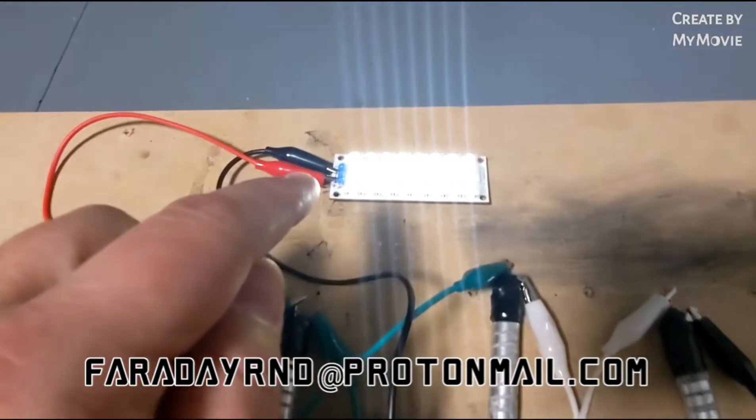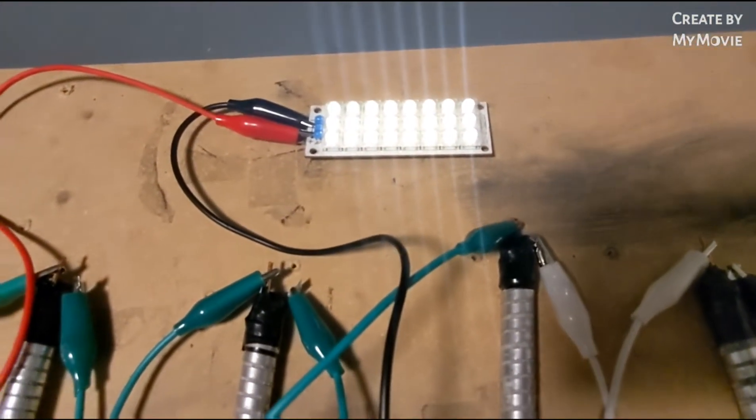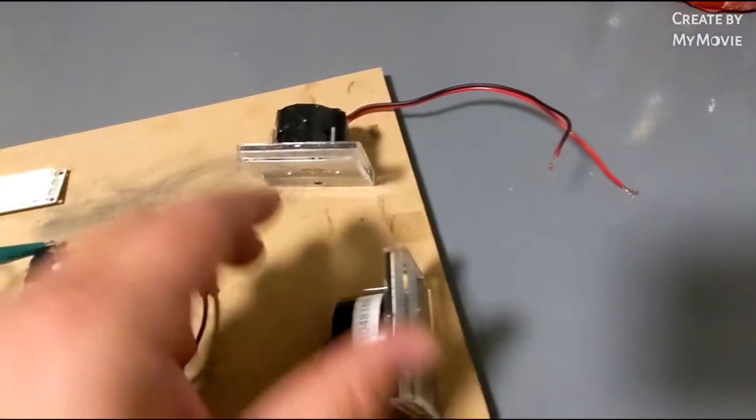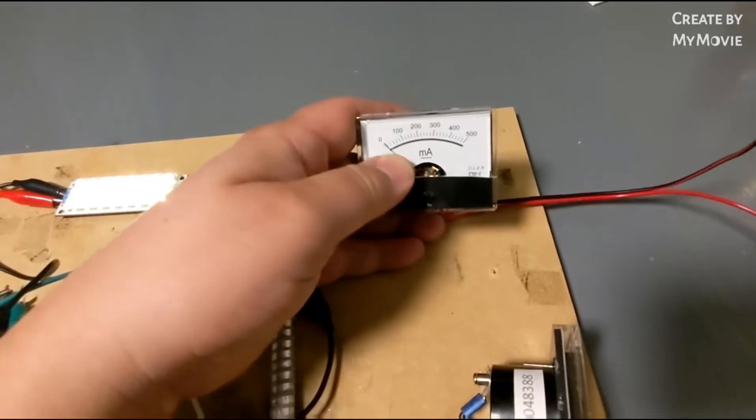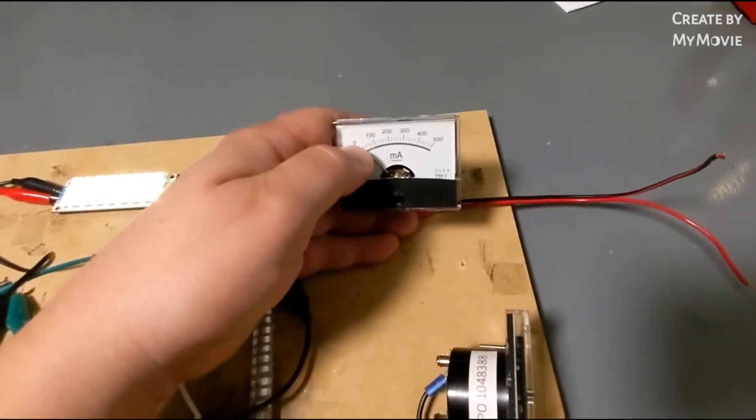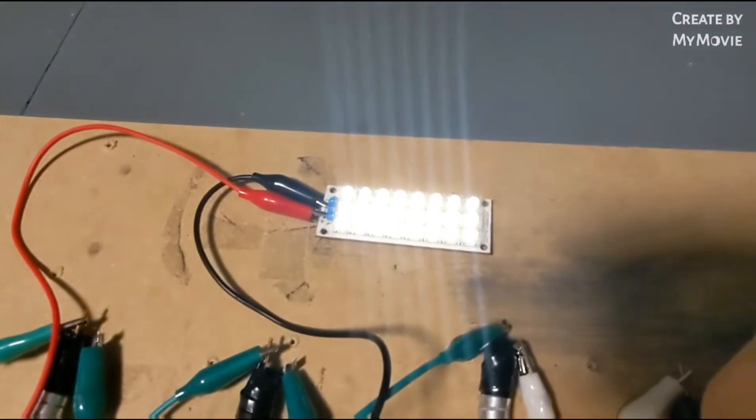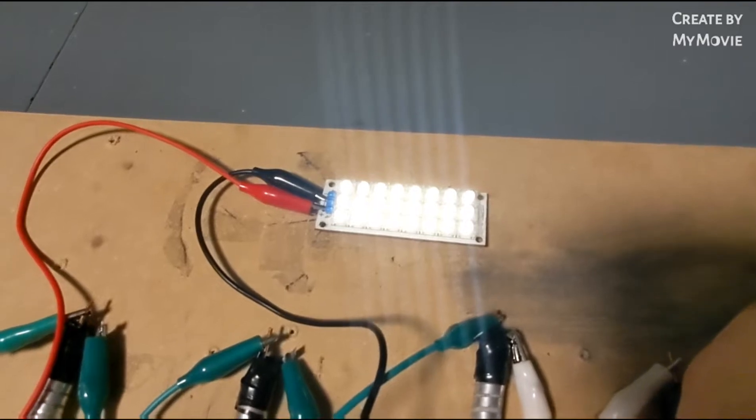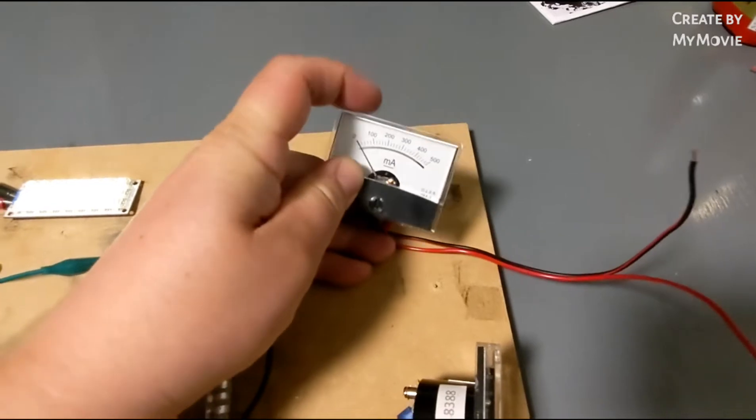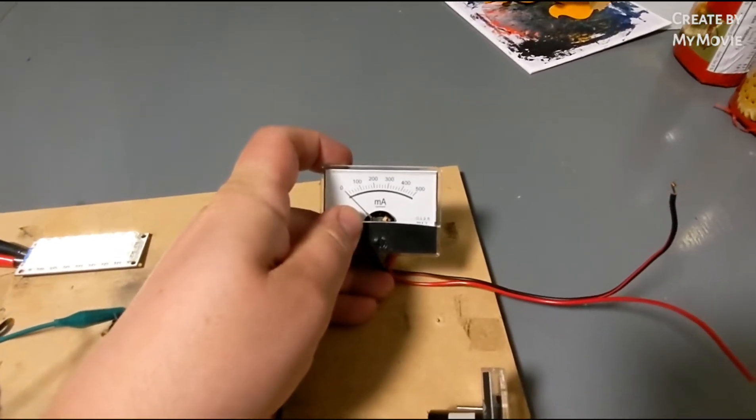I hooked up the light and this light went nuts. I'm like, oh my god, where's all this current coming from? So anyways, I hooked up the amp meter. Before, the first test I did it would only register about 20 milliamps. Well, I hooked this up now and you can see that it's creating a lot more current.